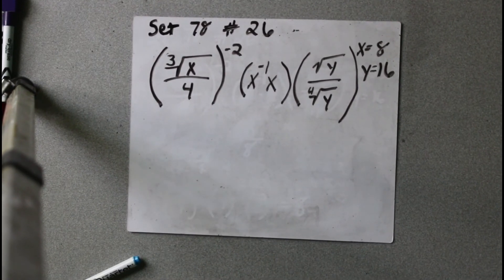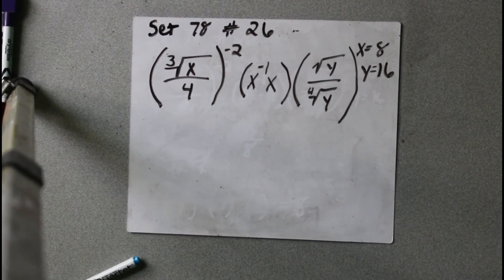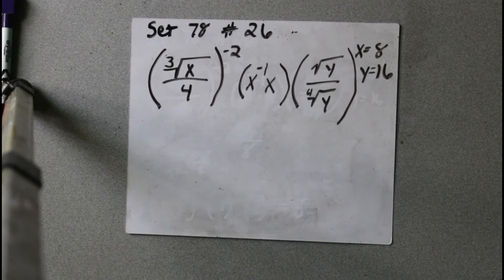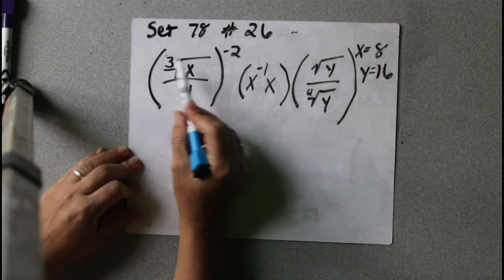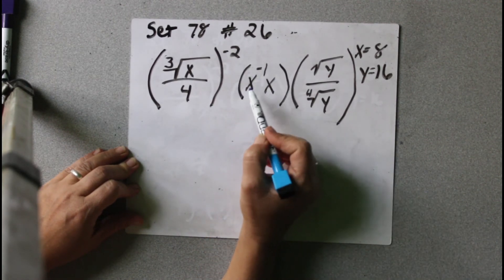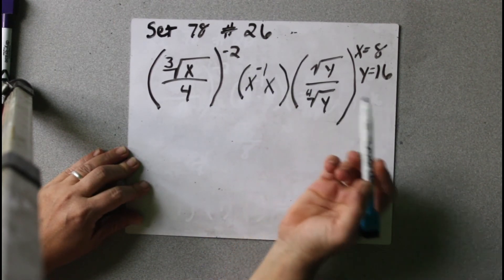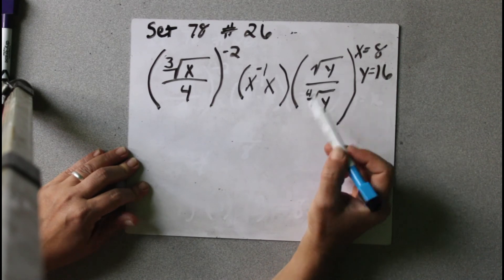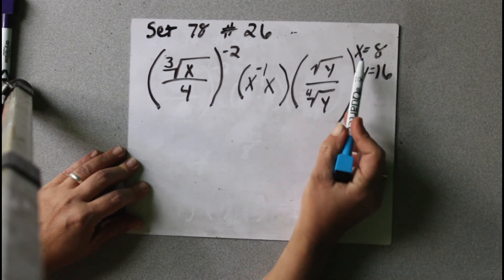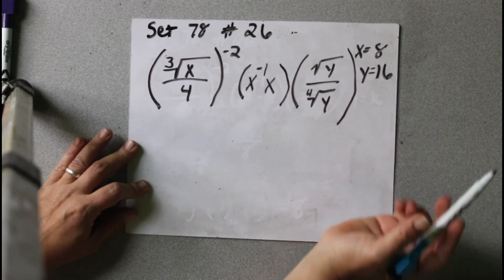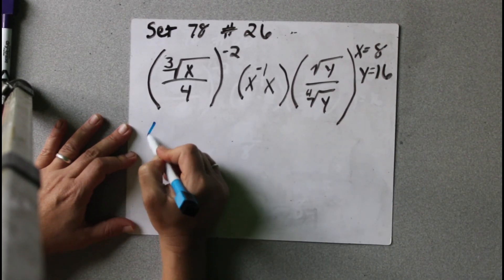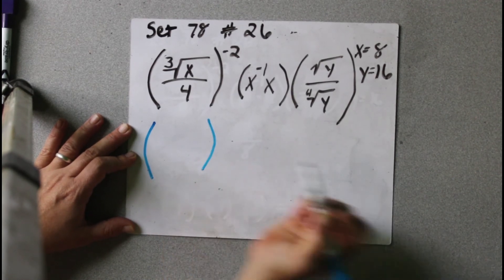The next problem we're going to look at is from set 78, problem number 26. Now this looks super complicated. We've got the third root of x divided by 4 to the negative 2, times x to the negative 1, times x, times the square root of y divided by the fourth root of y. And it tells us that x equals 8 and y equals 16.